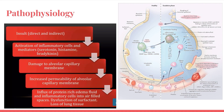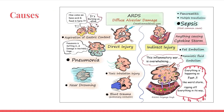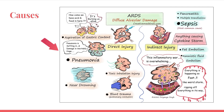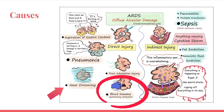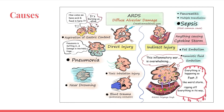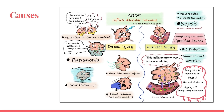Causes of ARDS can be direct or indirect. Direct causes include lung infections like pneumonia, aspiration of gastric content, chemical/toxic inhalation injury, blunt trauma, and near drowning. Indirect causes include sepsis — the most common cause — followed by pancreatitis, multiple blood transfusions, fat embolism, amniotic fluid embolism, and anything causing a cytokine storm.